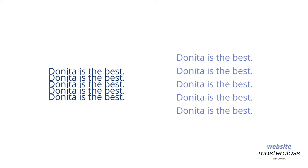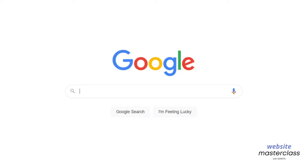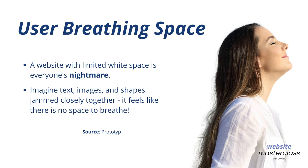Another reason why white space is important is that it increases engagement rates. The average attention span of an internet user is six seconds, which is even less than a goldfish at seven to eight seconds. Hence we need to make this process simple for our users to focus on our call-to-action element. Think of the Google search page — the search bar is in the middle surrounded by white space. The white space helps the search bar become more prominent, allowing the user to shift focus to the actual search bar.